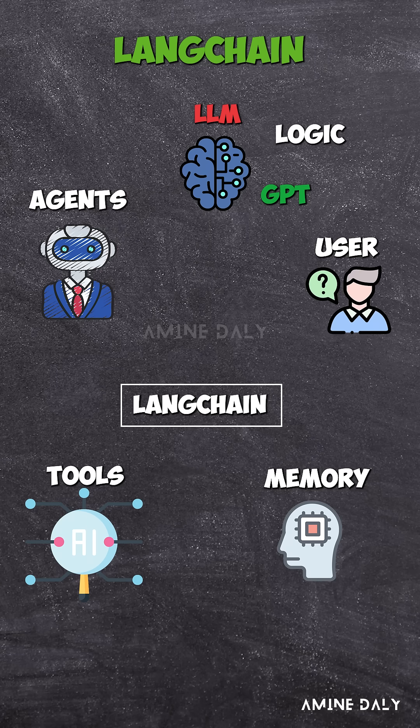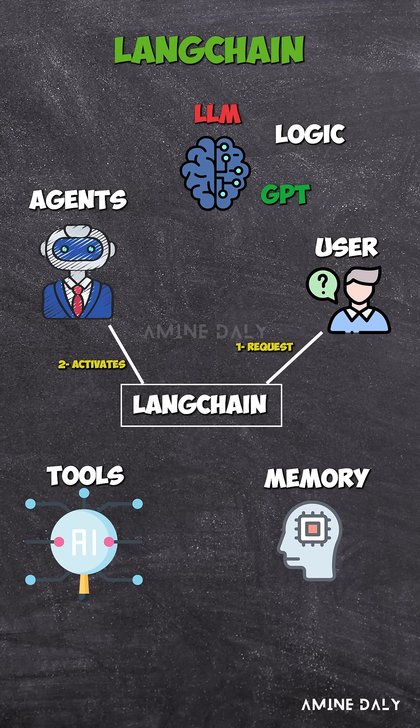Step 1: A user sends a query. LangChain activates an agent to handle it. Step 2: The agent talks to the LLM to understand the task, reason, and plan.